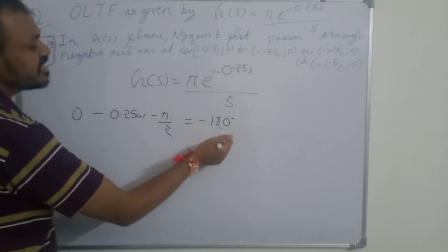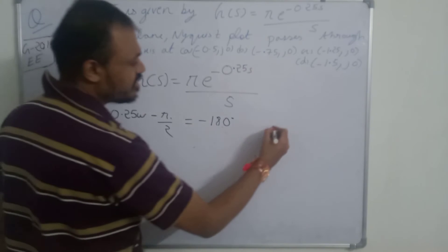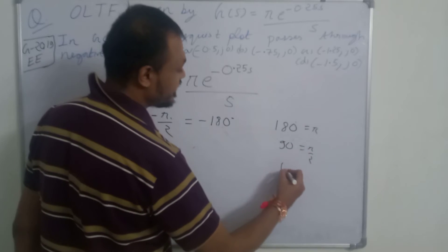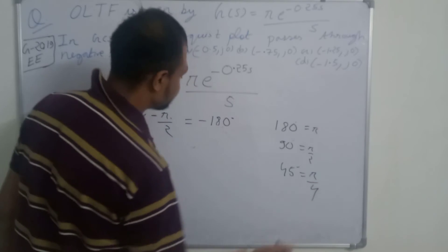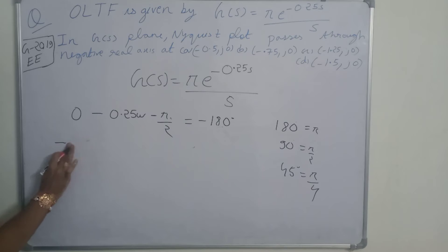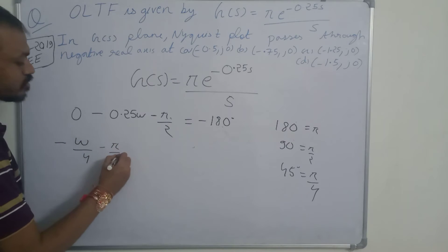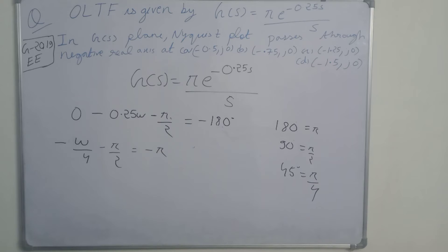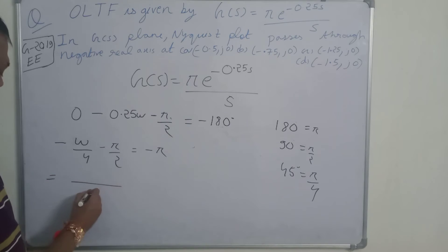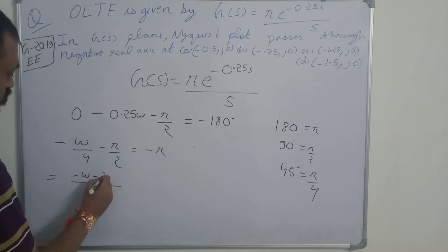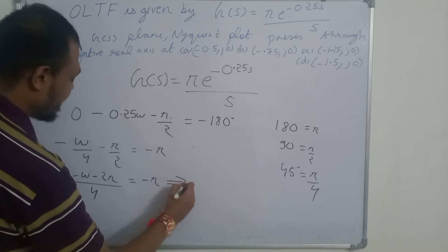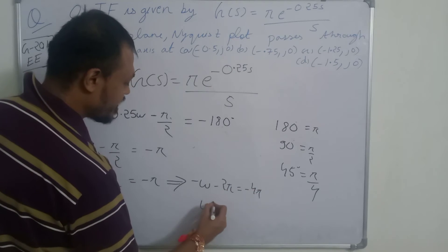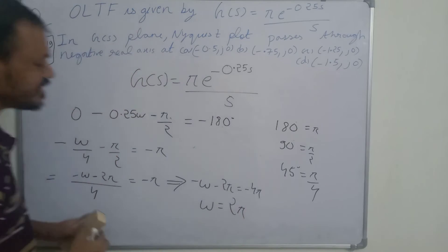Since ω is in radians, we convert: 180° = π radians and 90° = π/2 radians. So we write: −ω/4 − π/2 = −π. Multiplying through: −ω − 2π = −4π, which gives ω = 2π. We have found that the Nyquist plot crosses the negative real axis at ω = 2π.